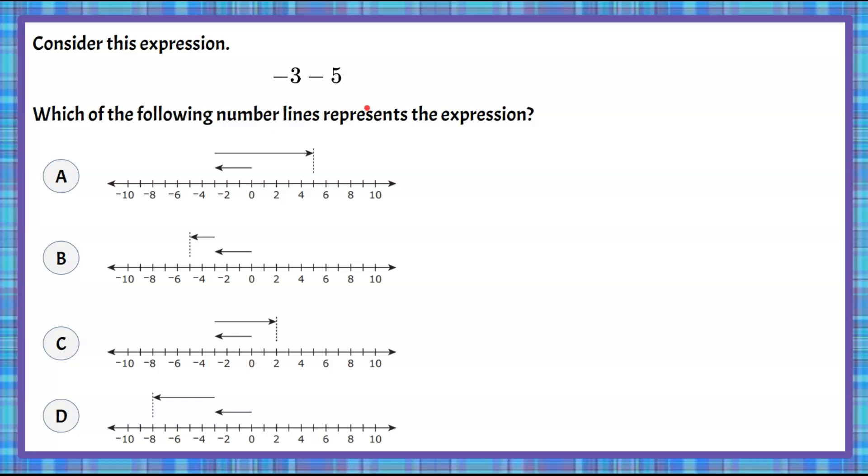Welcome back. So once again, we've got negative 3 subtract 5, and we're identifying the number line that represents this expression. So let's make sure we understand that we have our first value in our expression, negative 3. Our operation is subtract, and our second number value is positive 5.